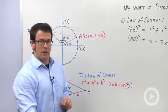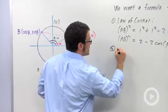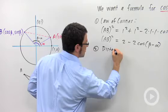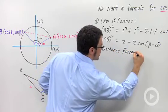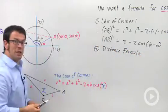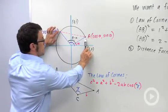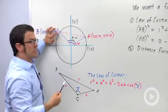Now the second thing I want to do is use the distance formula. Remember, the distance formula is how we find the distance between two points in the plane. And I want to find the distance between these two points. I actually want the distance squared.